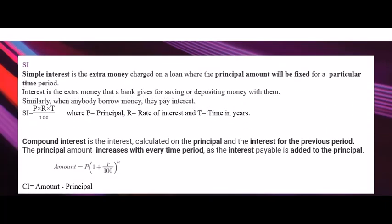Simple Interest is the extra money charged on a loan where the principal amount will be fixed for a particular time period. Interest is the extra money that a bank gives for saving or depositing money with them. Similarly, when anybody borrows money, they have to pay an interest. The formula for simple interest is P into R into T by 100, where P is the principal, R is the rate of interest, and T is time in years.